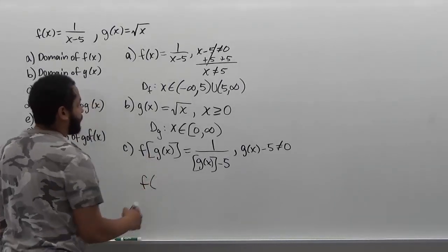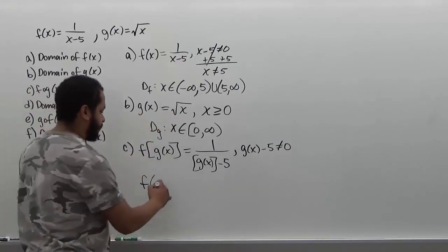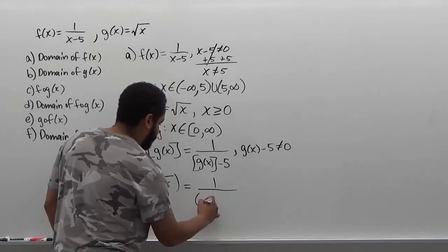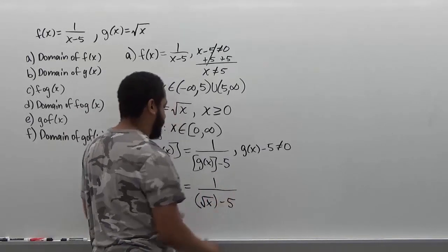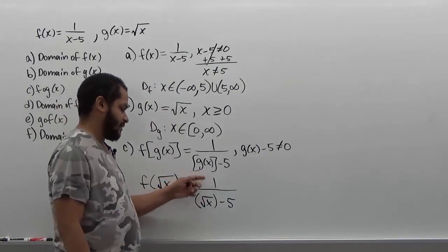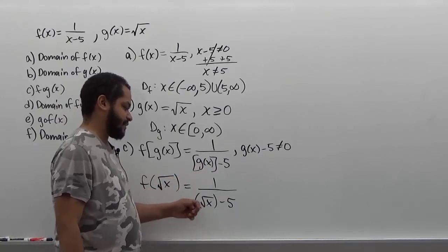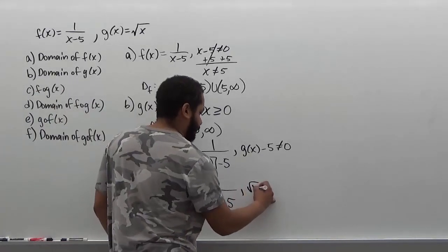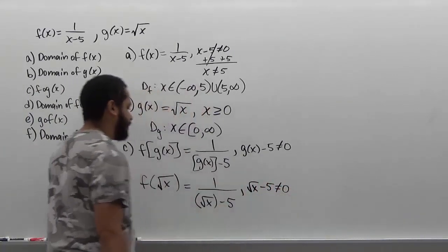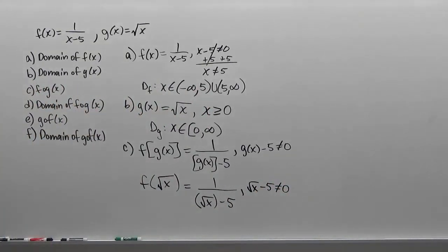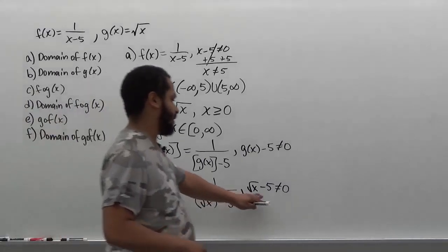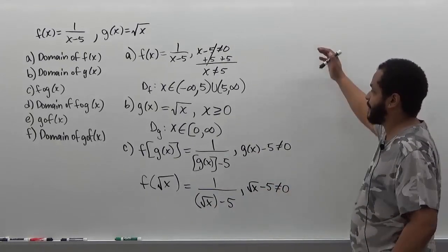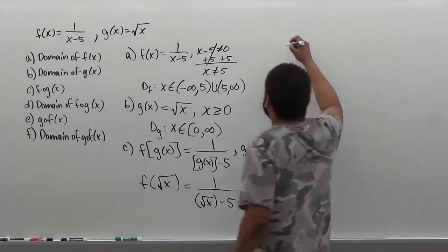We have the function of the input as g, which g of x is the square root of x. This then becomes 1 over the square root of x minus 5. We can see it looks identical, where the input is in the position of the values — where g of x is the radical of x. And finally, we know the condition for this to work is the square root of x minus 5 cannot be equal to 0. Now let's get into the actual domain, because this doesn't represent the full domain — it's just the reference value for what inputs would not be accepted.